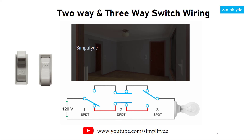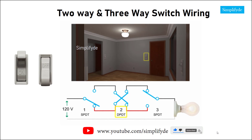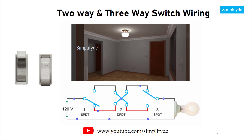If we keep switch one and three in the same positions, and throw switch two into the crossover position, a complete connection is once again established and current flows through the red wire to the black wire to light the bulb.